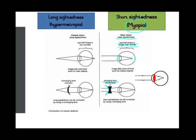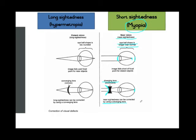The diverging lens spreads out the light rays so that the image can then be focused on the retina, instead of in front of it. So near-sightedness can be corrected by using a diverging lens, which reduces refraction. Short-sightedness can also be rectified with refractive surgery. Now let's look at hypermetropia — also known as long-sightedness. The problem here lies with the shape of the eyeball, which is too rounded.